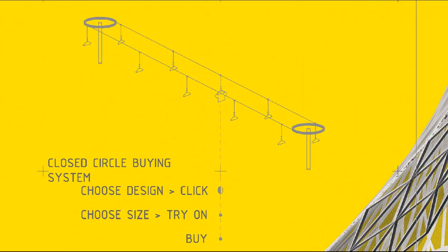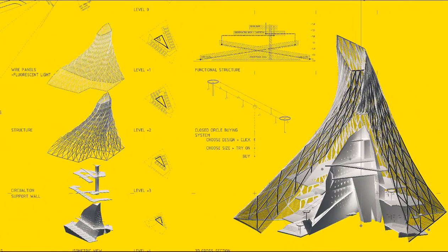The fan store is a space where participants can choose gadgets related to Euro 2012, like t-shirts of their national team players. It works like a closed movable circle bind system that follows a loop path, so the fan going upstairs chooses their design and orders it by clicking the related button. On the 3D section we can see how it works.